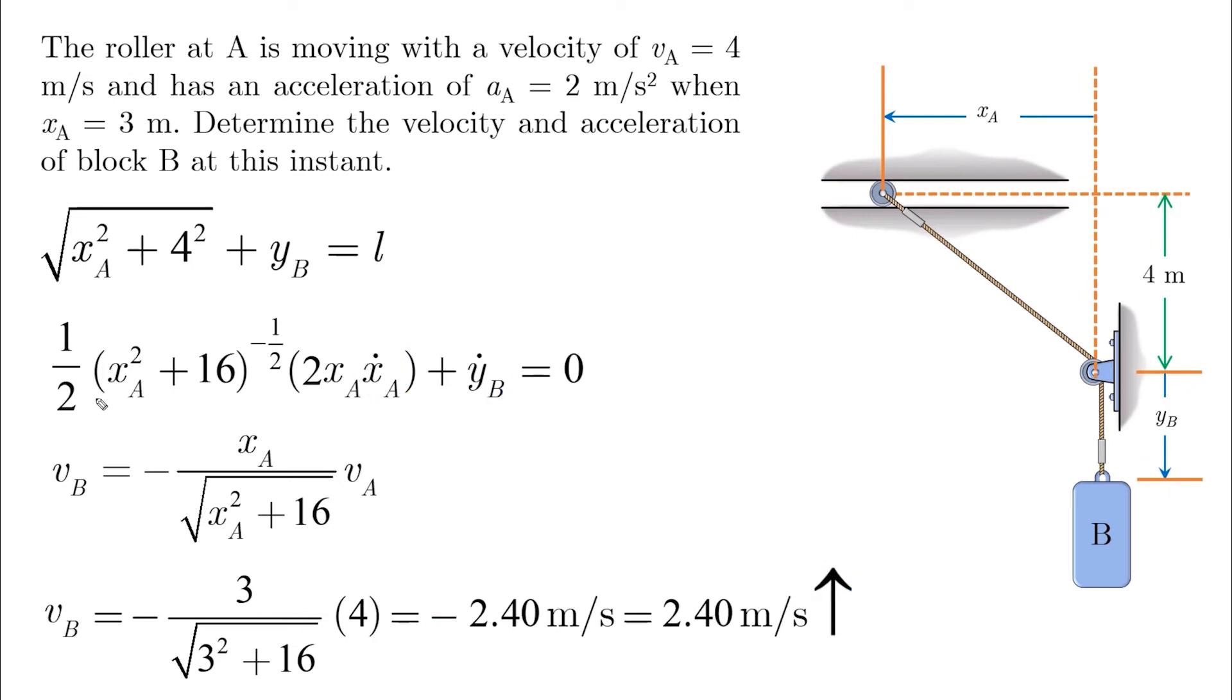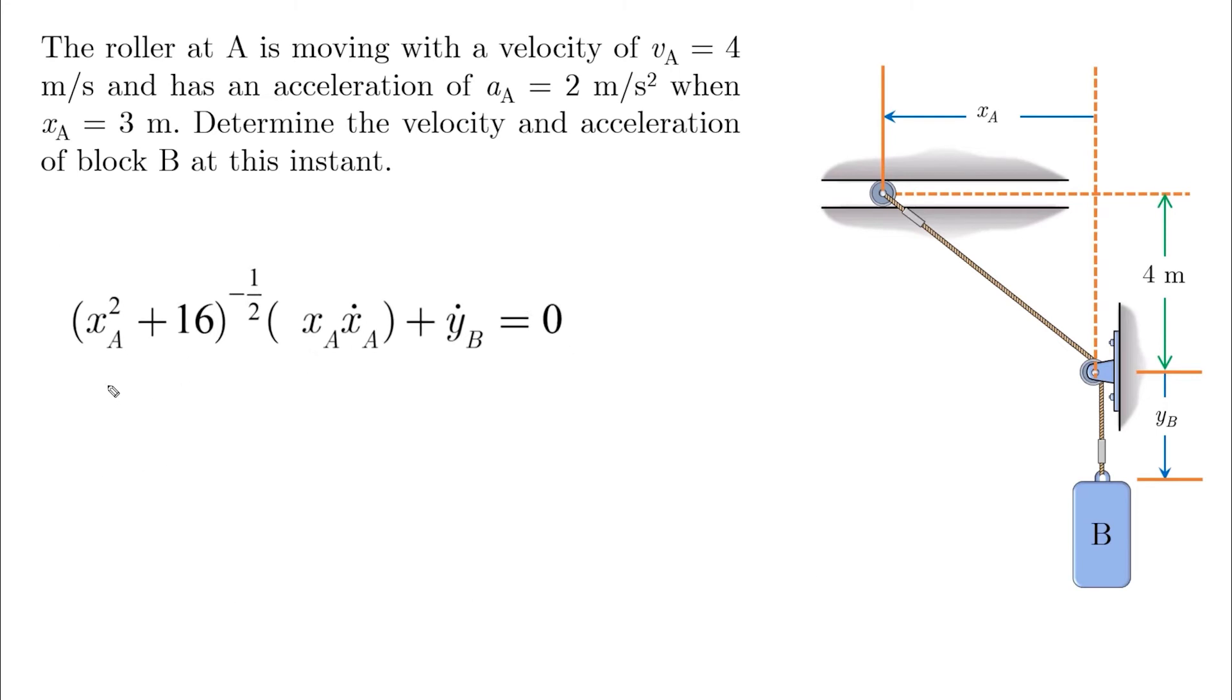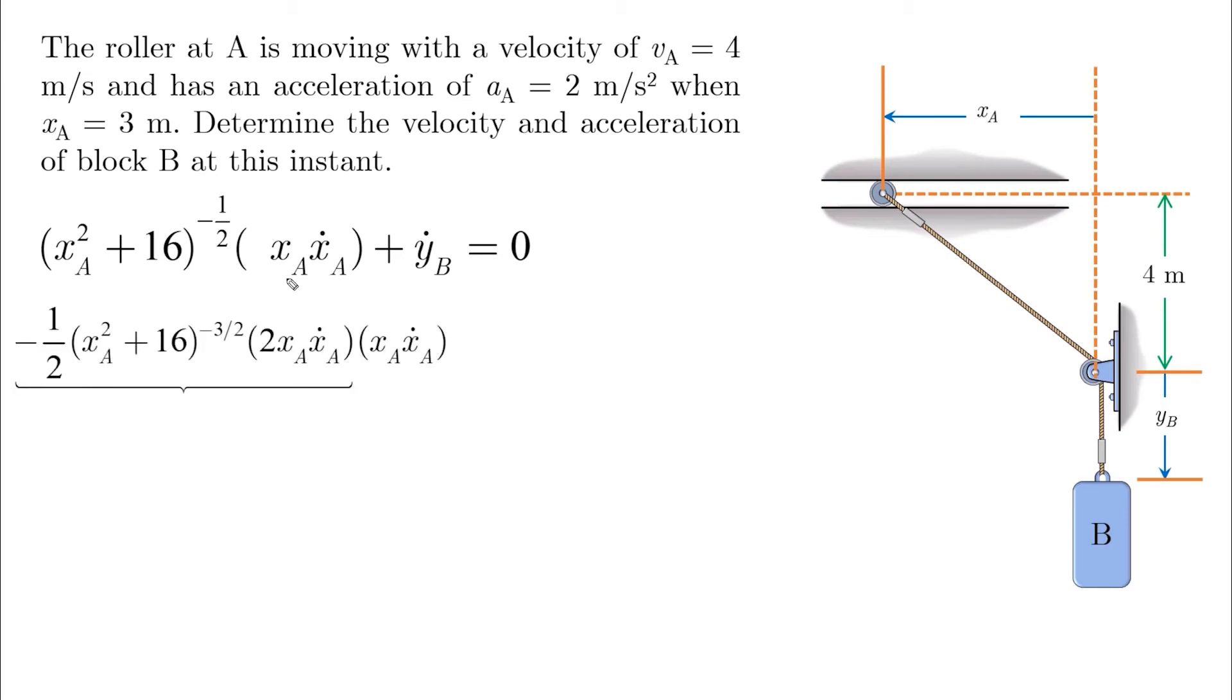To find the acceleration, we have to go back to our first derivative and take the derivative again, which consists of a multiplication rule of derivatives. Consider this as A and this as B, so we have to take the derivative of A multiplied by B, then add A multiplied by the derivative of B.